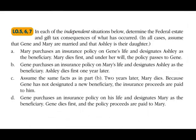Let's take a look at this exercise or simulation. You might be asking why would this be a simulation — this is what the simulation would look like on the exam, possibly in a different format but basically the same thing. For example, here we are told in each independent situation, determine the federal, state, and gift tax consequences of what has occurred. In all cases, assume we have Jean and Mary, who are married, and their daughter is Ashley.